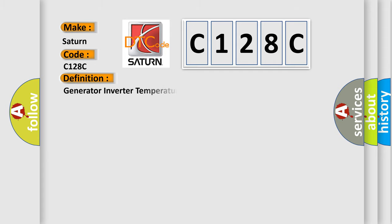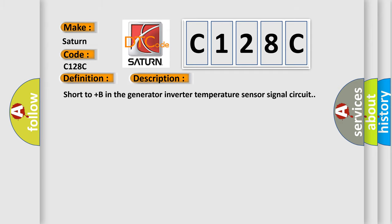The basic definition is Generator Inverter Temperature Sensor Circuit High. And now this is a short description of this DTC code: Short to plus B in the Generator Inverter Temperature Sensor Signal Circuit. This diagnostic error occurs most often in these cases: Inverter with converter assembly.